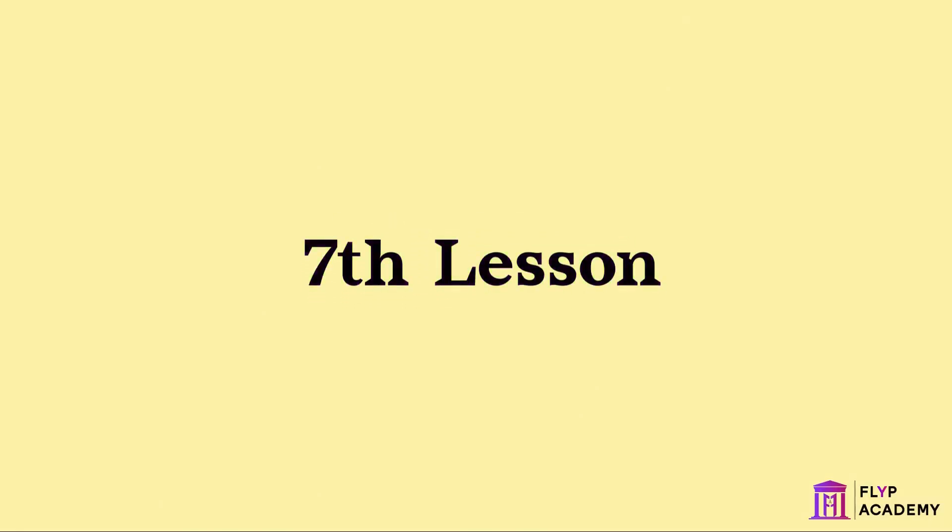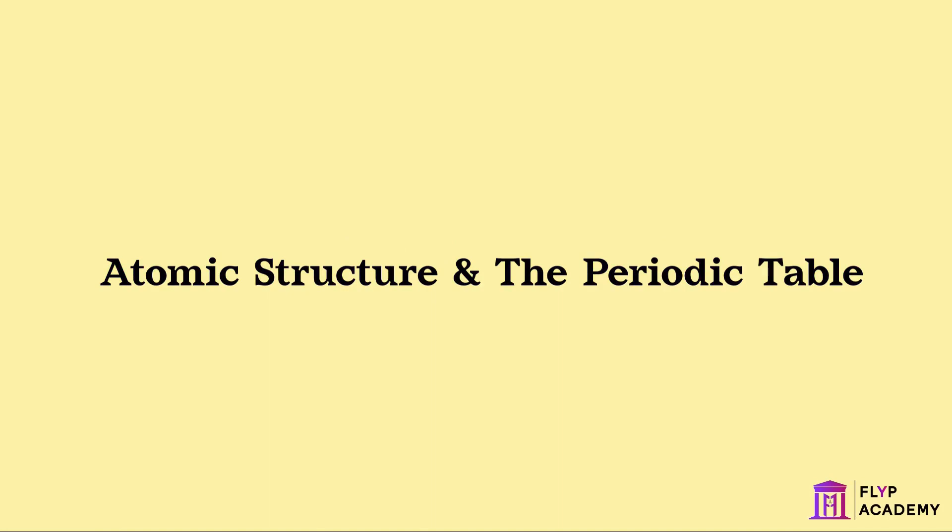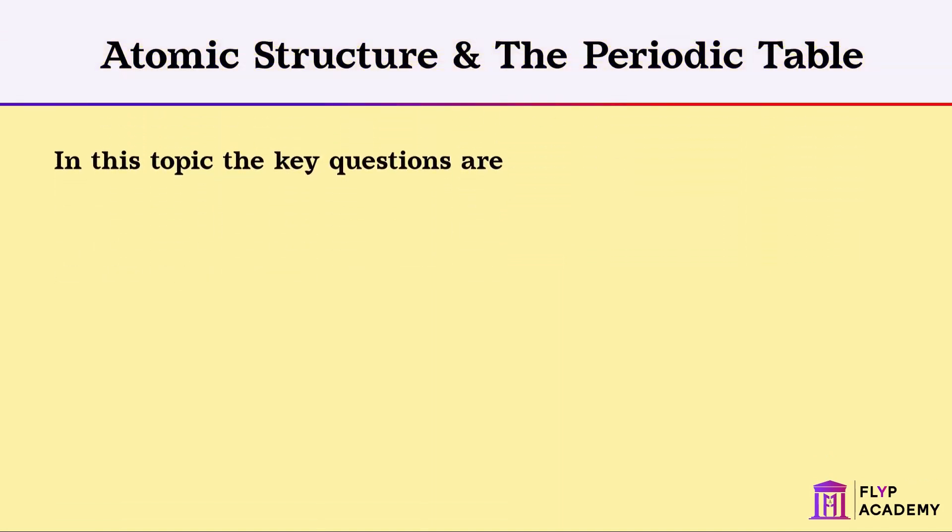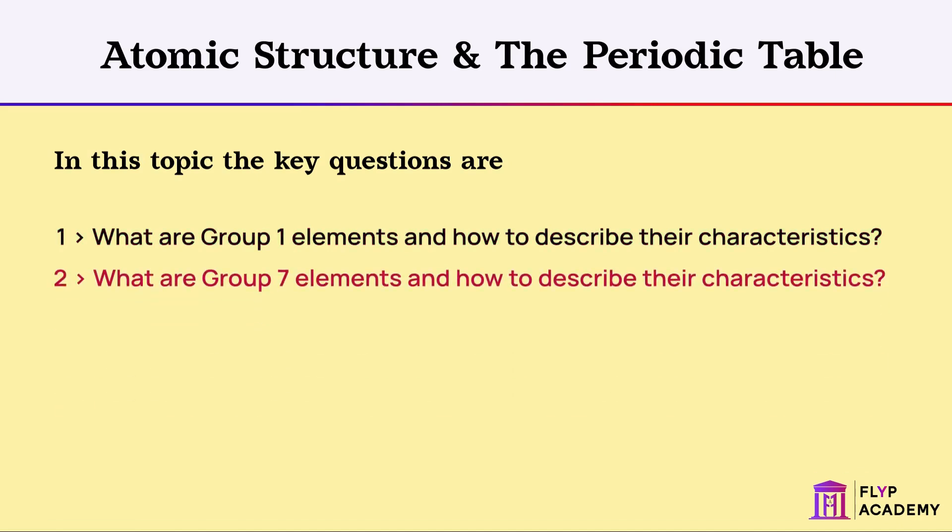Welcome to the seventh lesson of the Atomic Structure and the Periodic Table topic. In this topic, the key questions are: What are Group 1 elements and how to describe their characteristics? What are Group 7 elements and how to describe their characteristics?